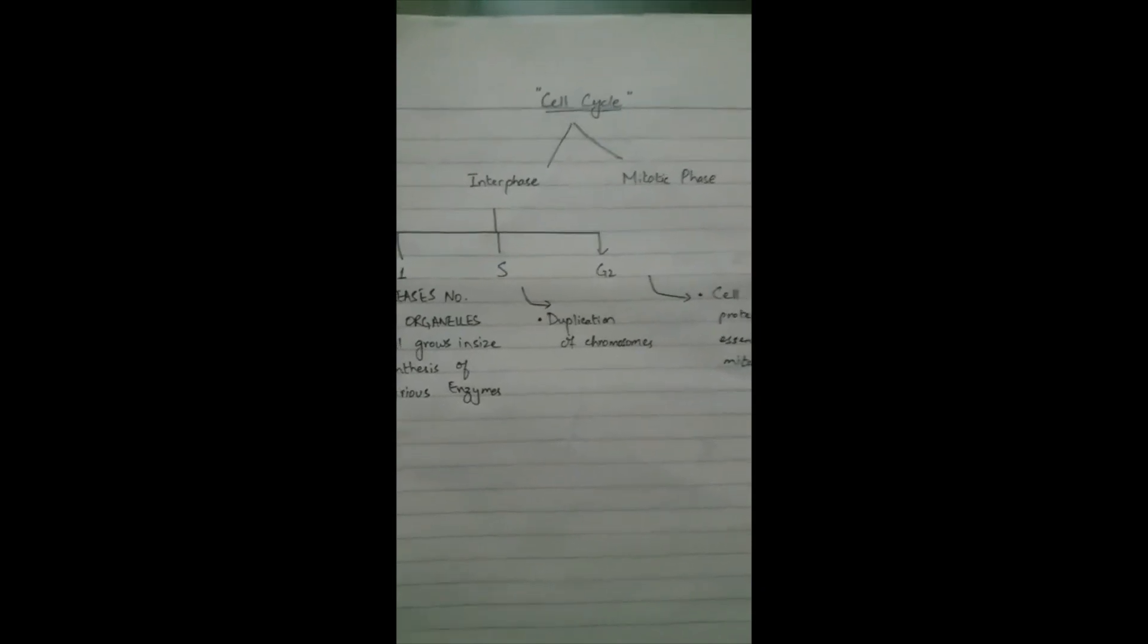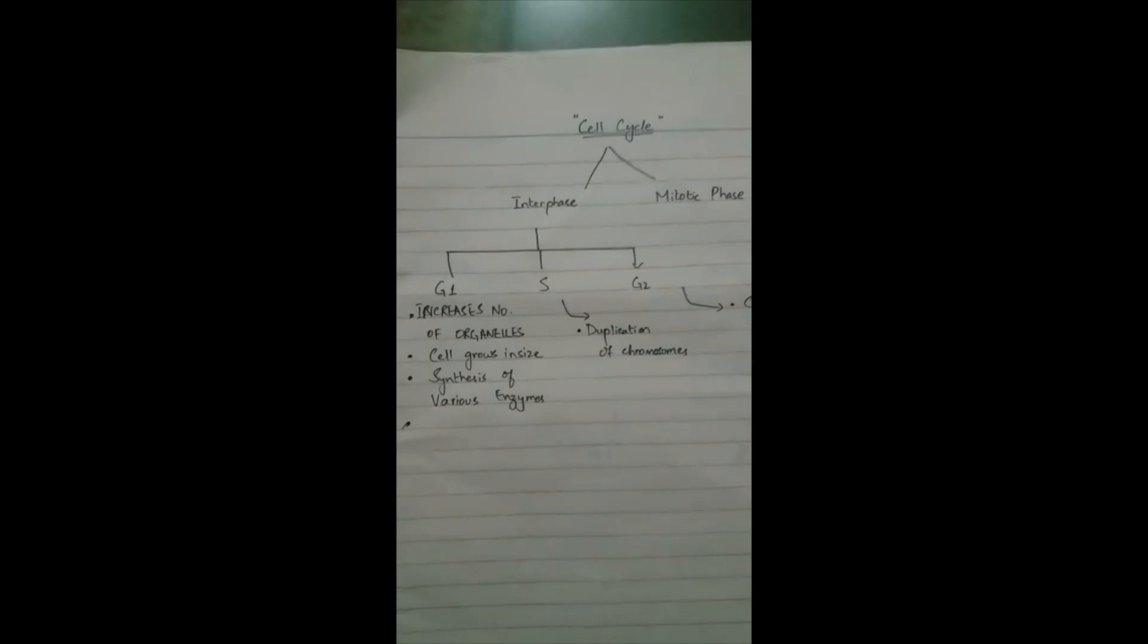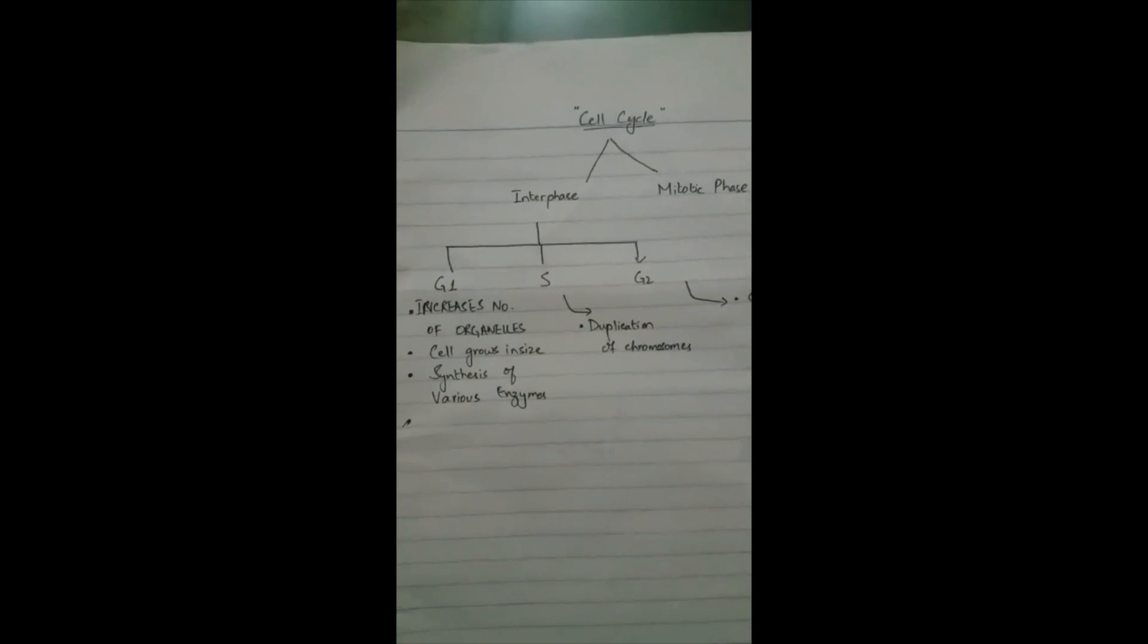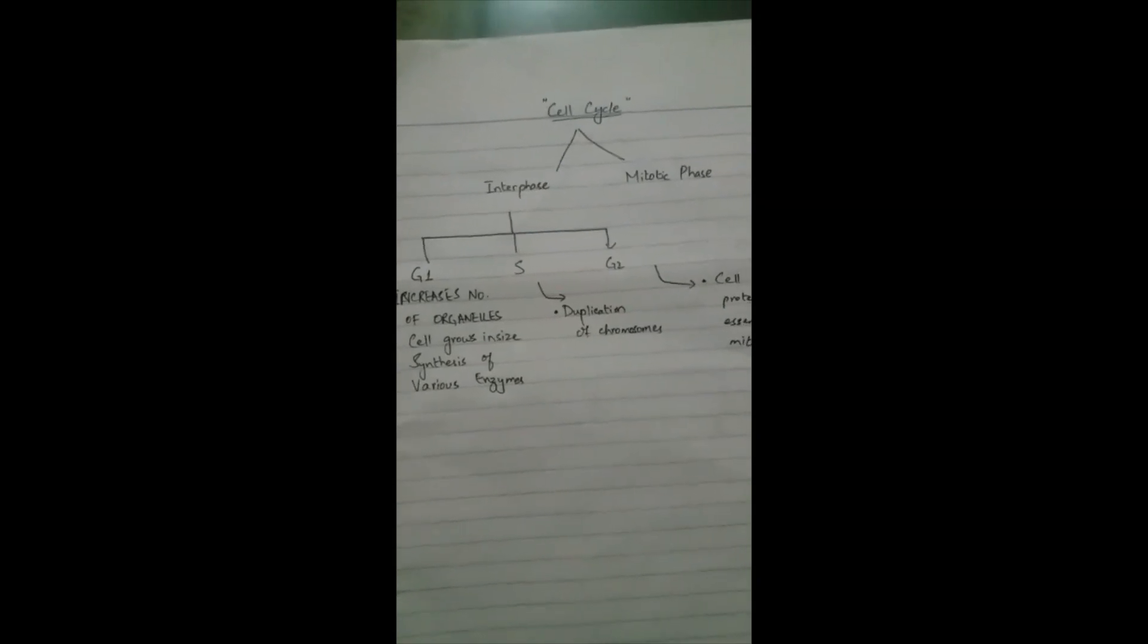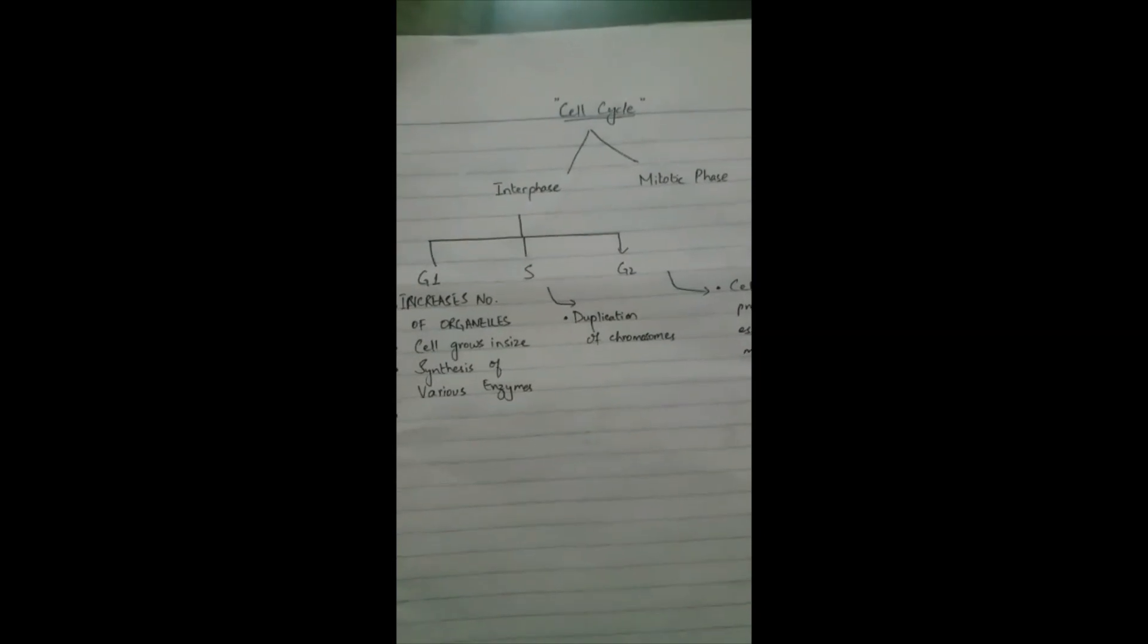The cell cycle consists of two main phases: number one, interphase, and number two, mitotic phase. Interphase is a longer time period in which metabolic activity is very high as the cell performs its various functions.